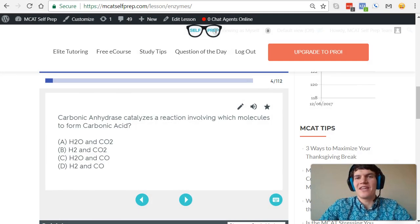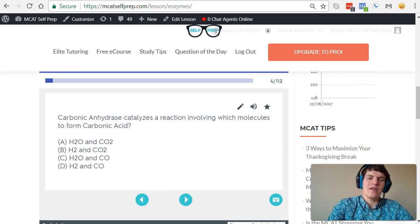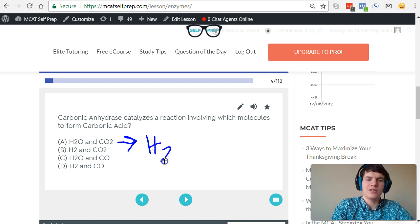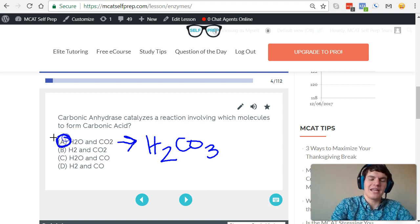Now that we understand the carbonic anhydrase mechanism, we're able to answer this question. We know that H2O and CO2 are converted into carbonic acid. So, therefore, A is the correct answer.